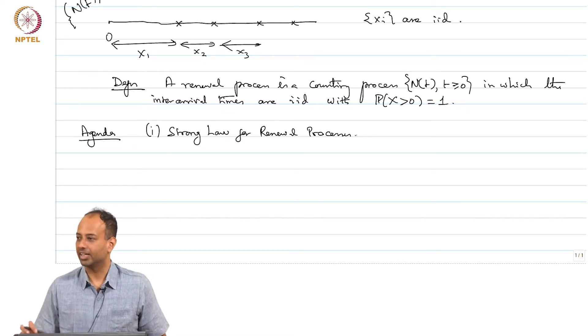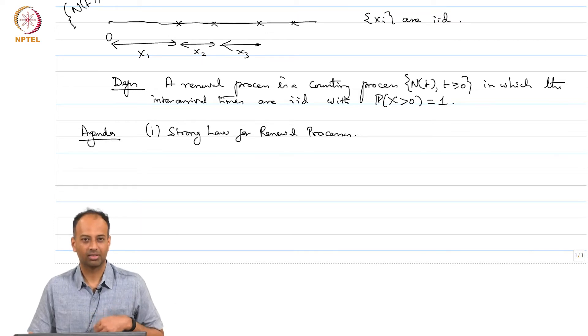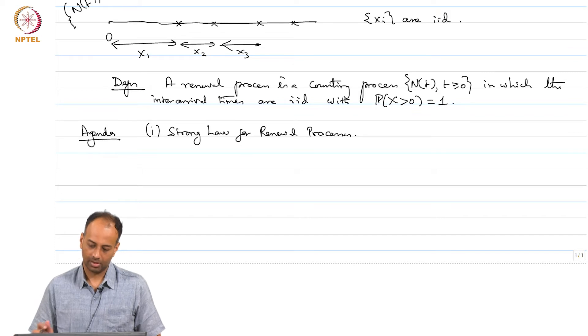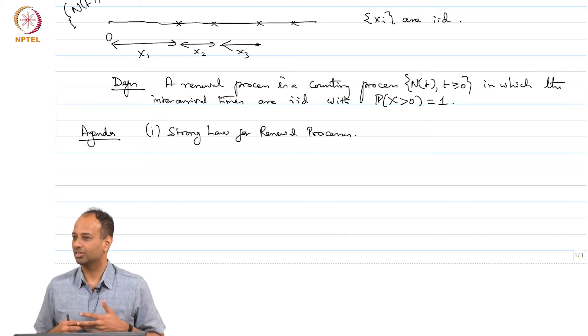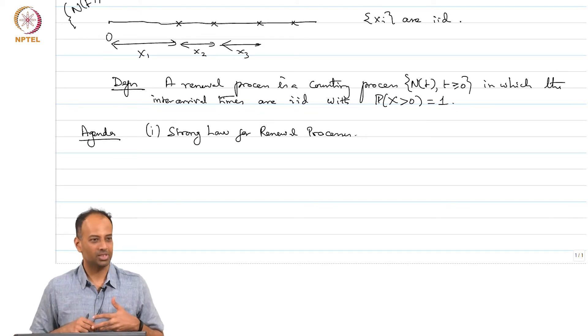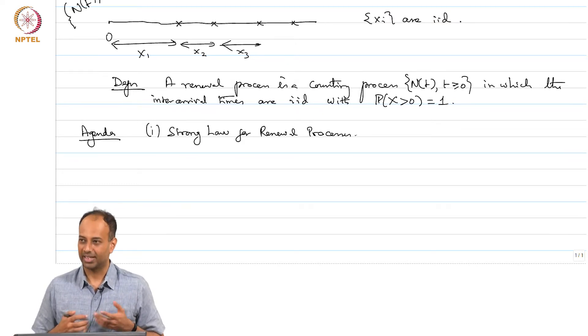These Xis are iid and therefore, they satisfy a strong law. What is the strong law for Xis? If sum over i equal to 1 to n Xi over n converges almost surely to expectation of X. So, something similar you would expect that because this renewal process consists of iid inter arrival times there should be corresponding strong law for NT as well.